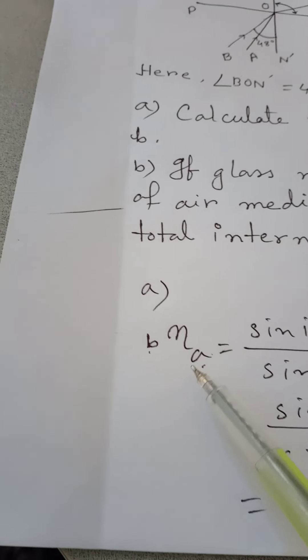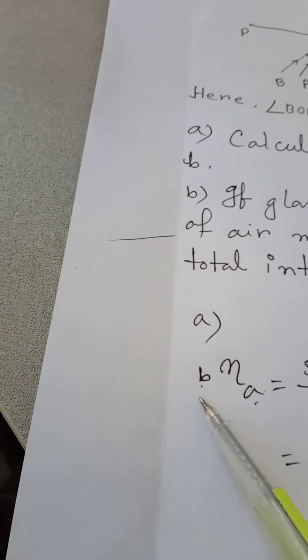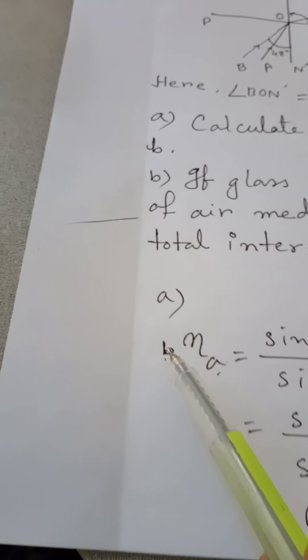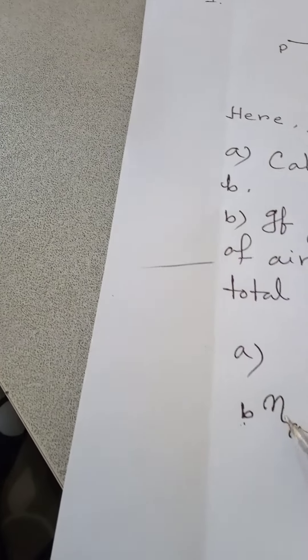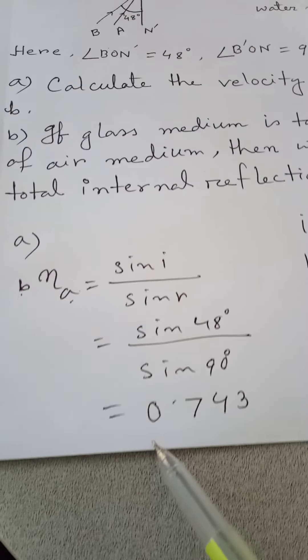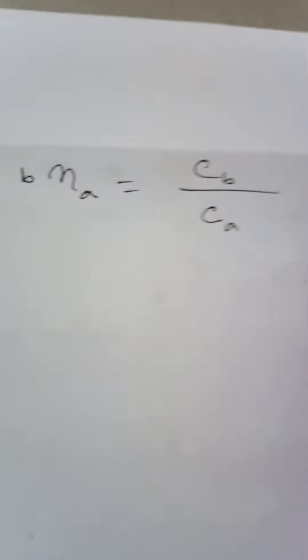As I have already explained in my previous content, the right-side index means 'with respect to that medium.' Light is coming from medium B to medium A, so bna means it is the refractive index of medium A with respect to medium B, and it equals 0.743.